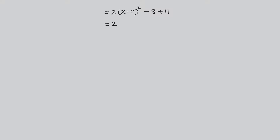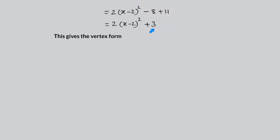After simplifying, negative 8 plus 11 gives positive 3. This gives the vertex form of the quadratic, which is f of x equals 2 times x minus 2 squared plus 3.